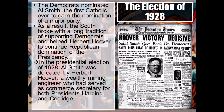Herbert Hoover easily won, becoming the 31st President. In the Electoral College, he dominated embarrassingly for the Democrats — receiving 444 electoral votes, winning states like North Carolina and Virginia that hadn't voted Republican since 1872. Al Smith received just 87 electoral votes. Hoover also dominated the popular vote, getting 58.2% to Smith's 40.8%. This was the Republicans' third consecutive presidential landslide victory. Charles Curtis became the 31st Vice President — and this was the last presidential election won by Republicans without either Richard Nixon or a Bush family member on the ticket.